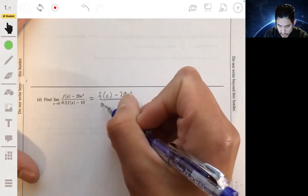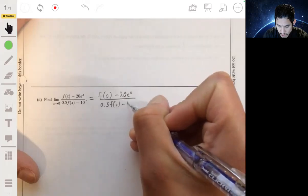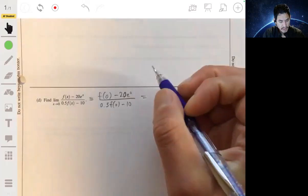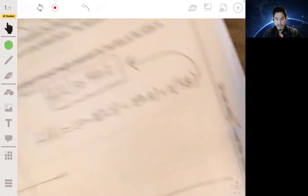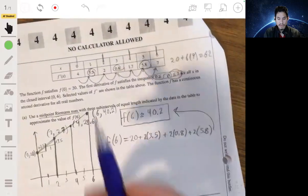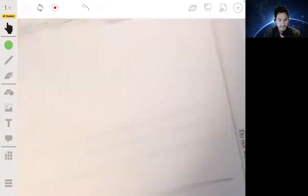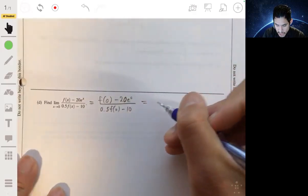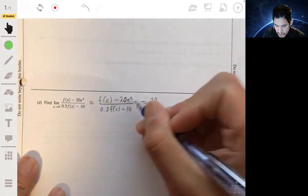f of 0, we're told it's 20. So this becomes 20 minus 20 times e to the 0, which is just 20, 20 times 1.